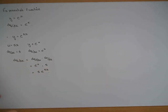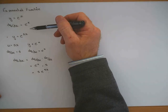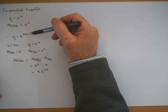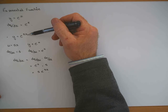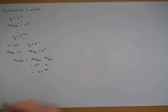So the derivative of e to the x is e to the x. For e to the 5x, it's a function of a function, so you differentiate it using the chain rule. That's all it is, and there is nothing else to it.